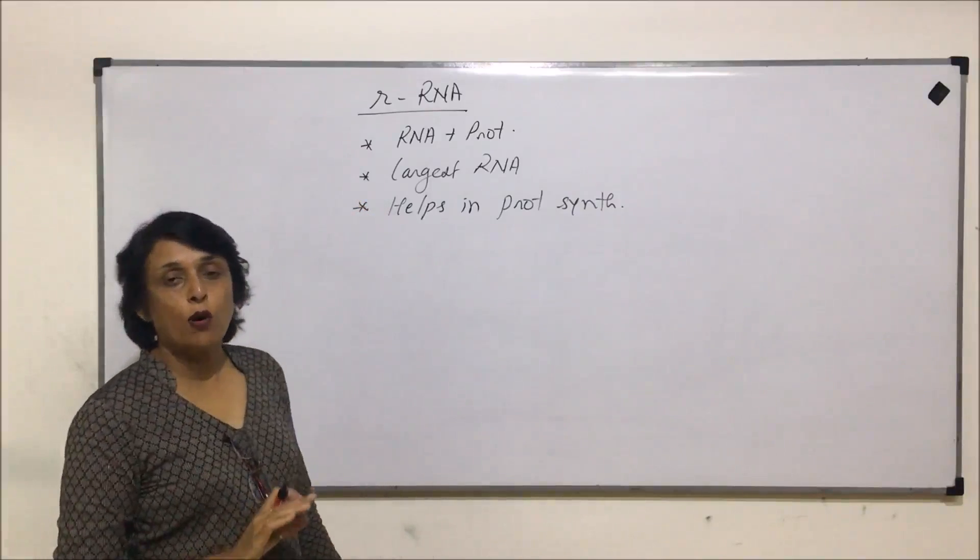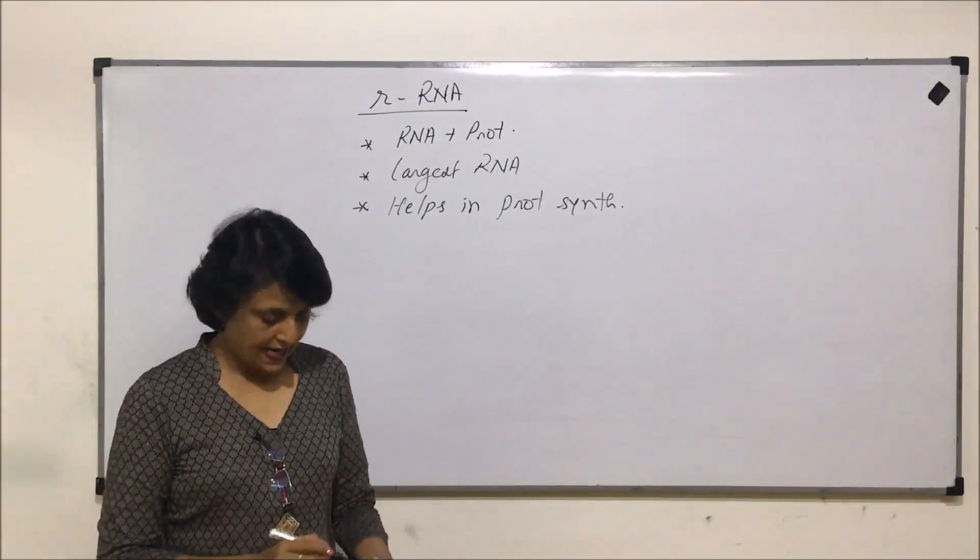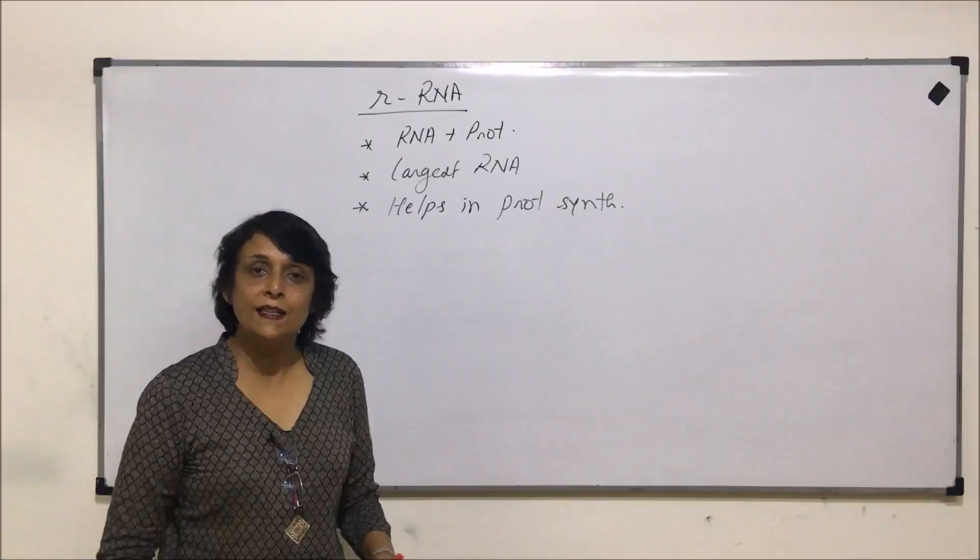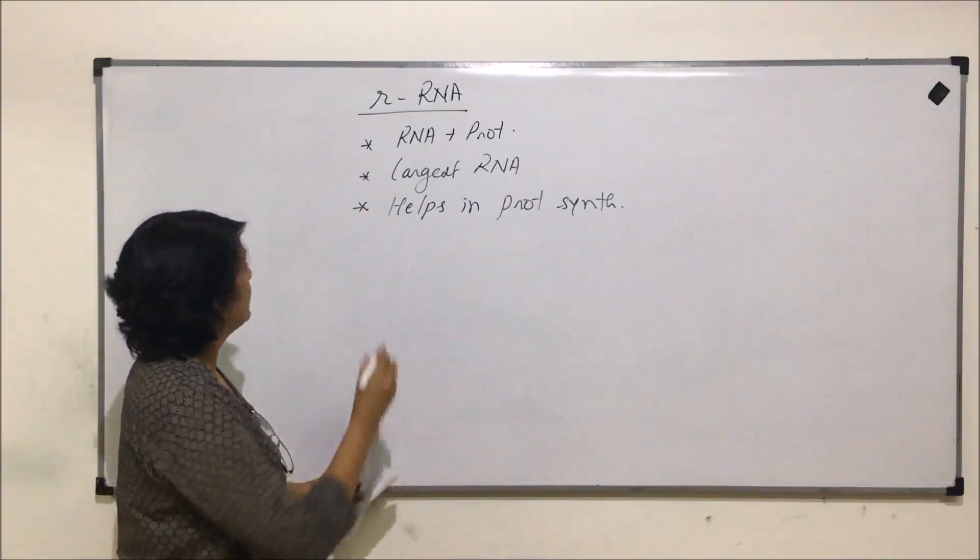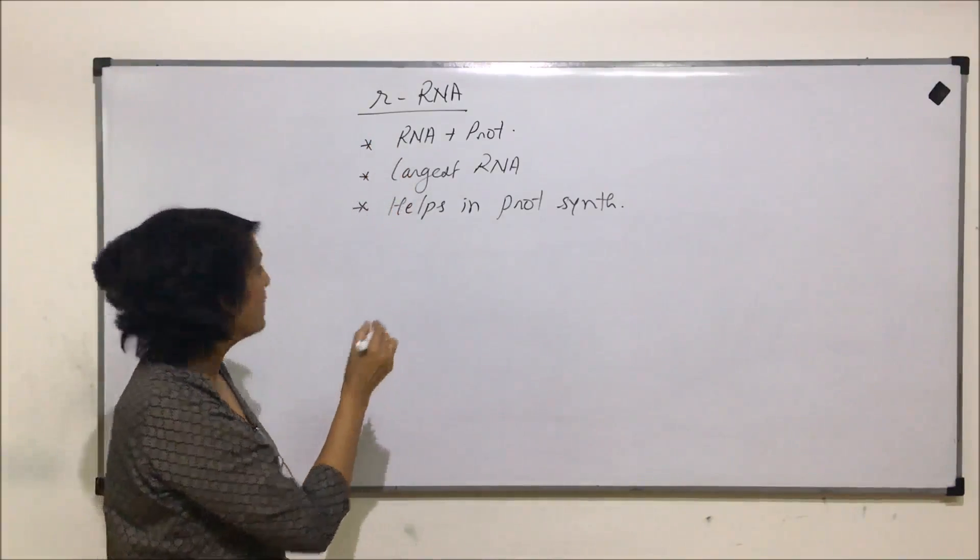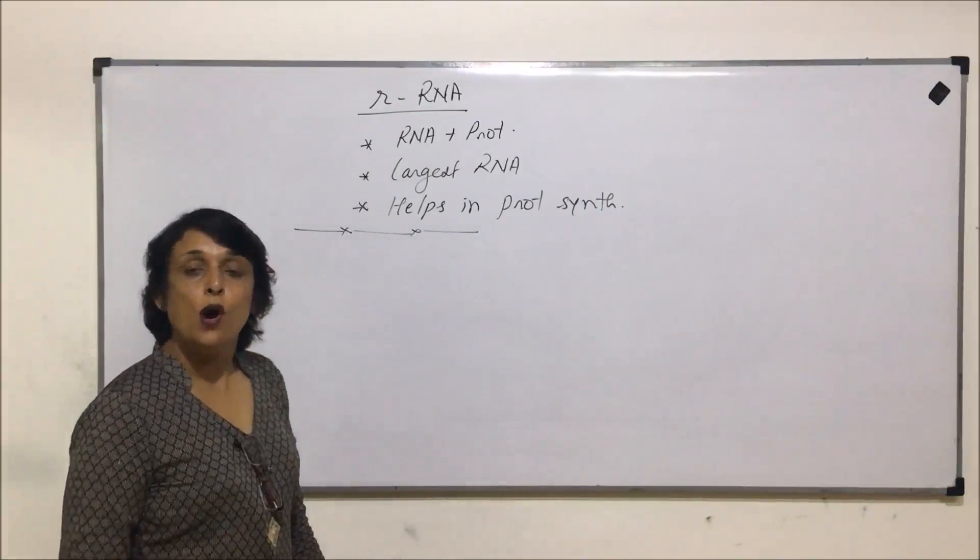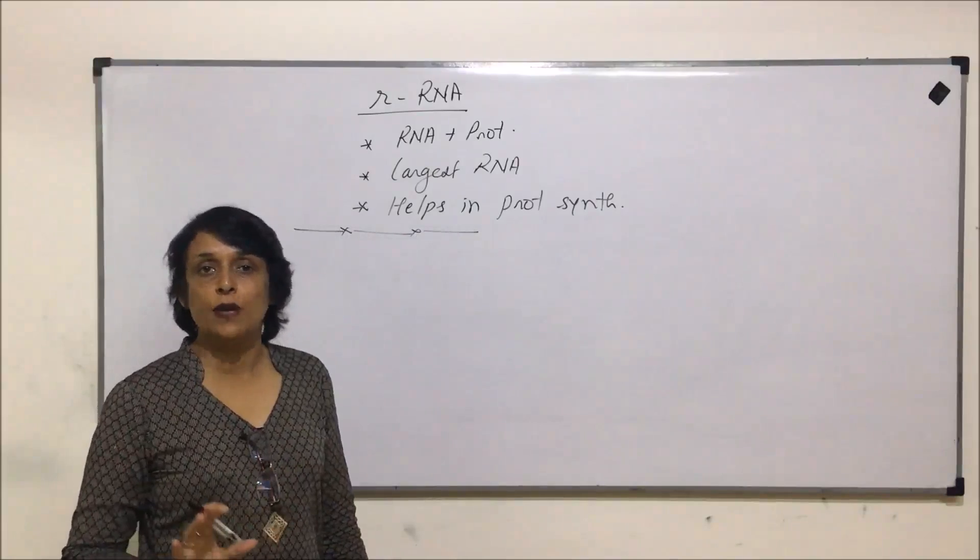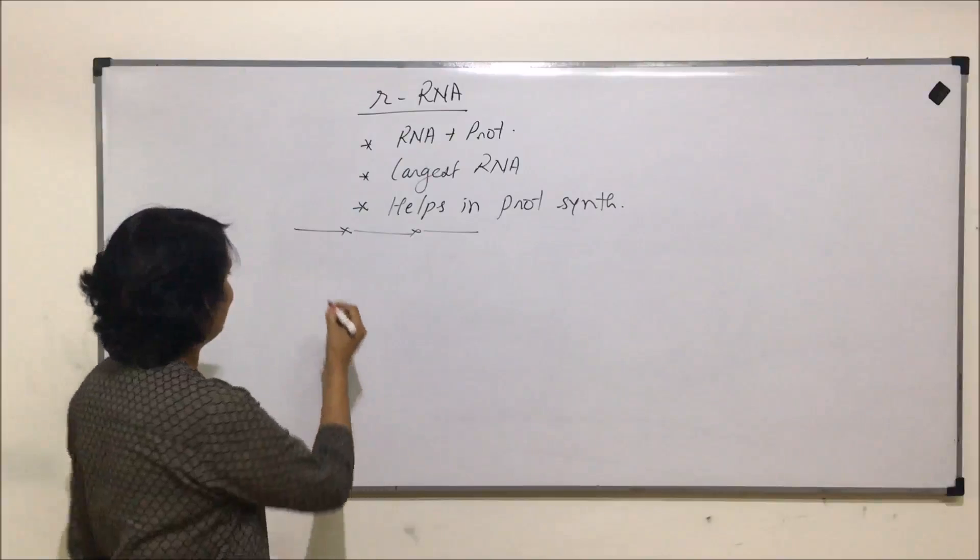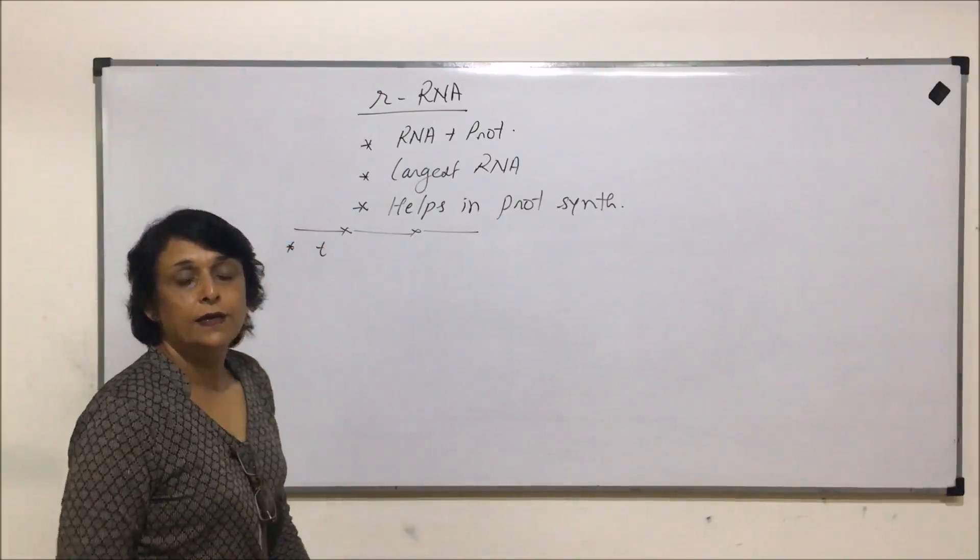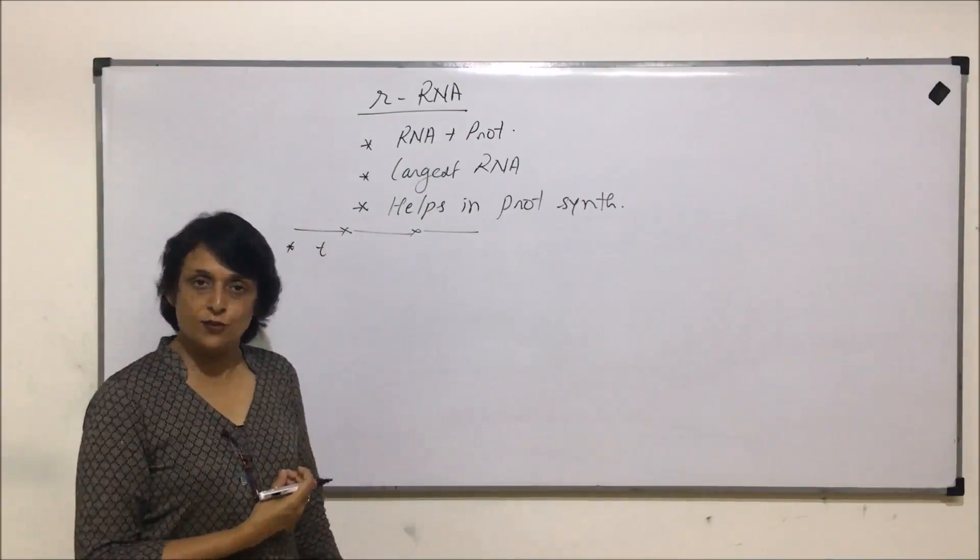Largest, we talked about all other RNAs also, that is mRNA and tRNA. We said tRNA is known as soluble RNA because it dissolves or it is soluble in NaCl solution. These are important things about RNAs. Now, let us talk about some other important general things related to all nucleic acids together. That means here we will be talking about DNA as well as RNAs.